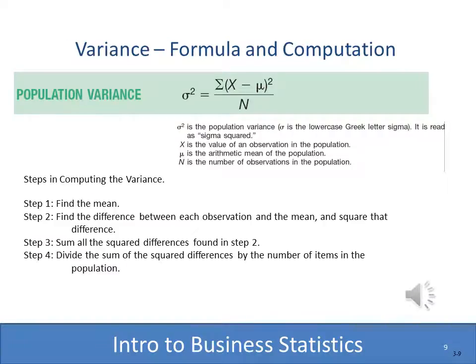Before we can compute the variance and the standard deviation, we need to briefly remind you of the difference between a population and a sample. We actually compute these slightly differently depending on whether we're using a sample or a population. A population is every member within the particular thing we're studying, and a sample is just a subset of that. For the population variance, we're summing up the squares of the differences between each value and mu — the population mean — divided by N, the number in the population.